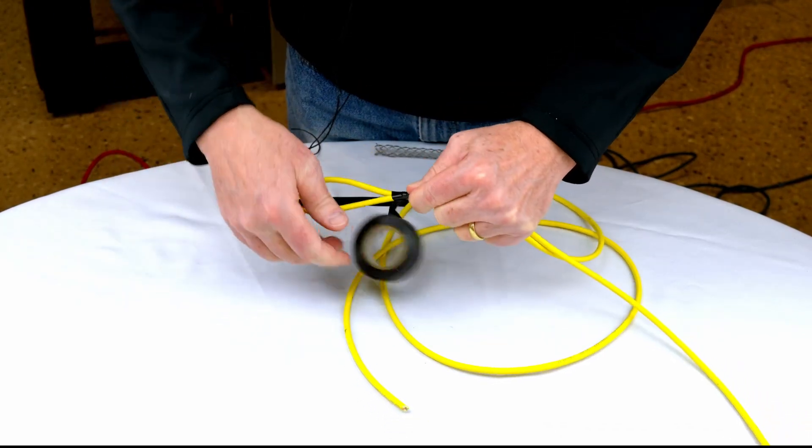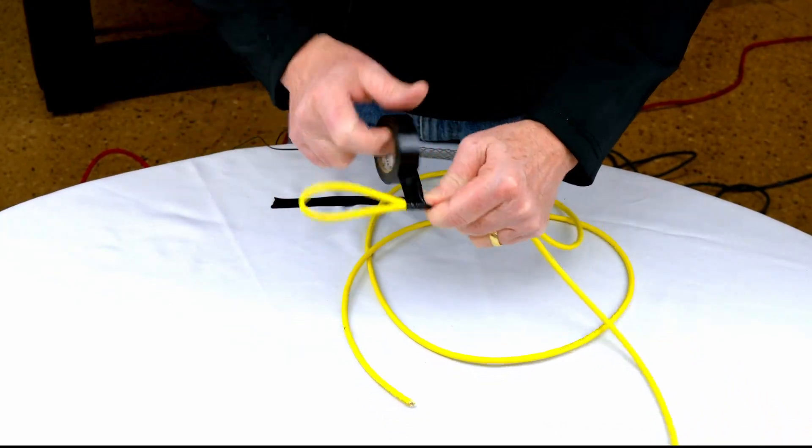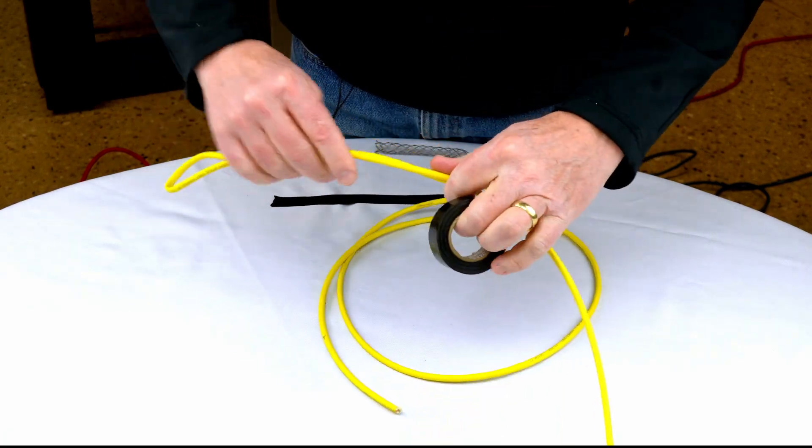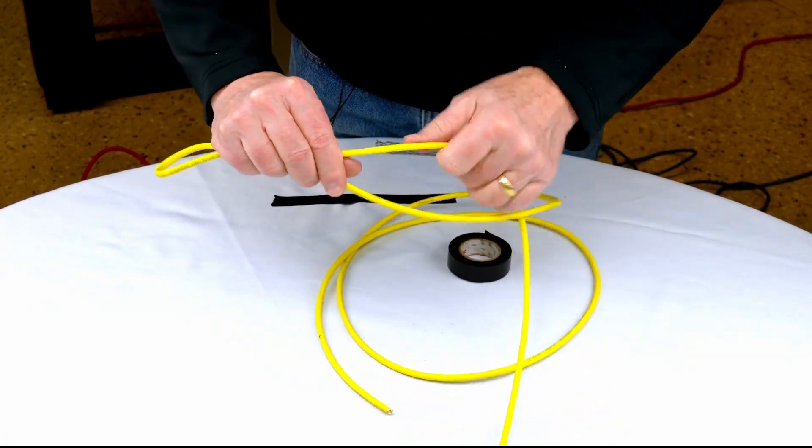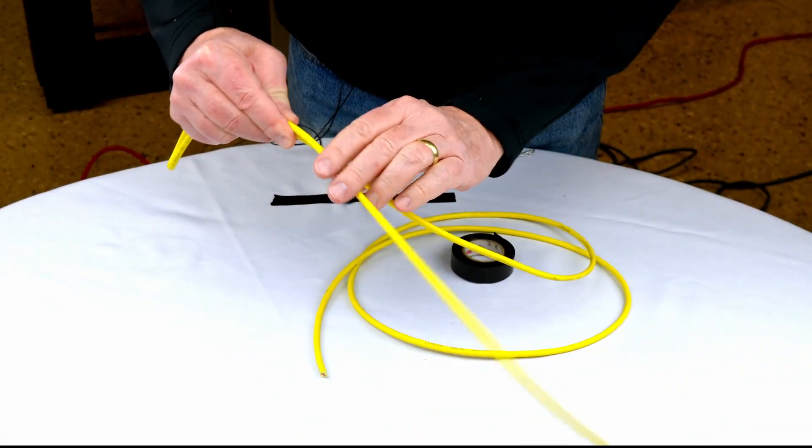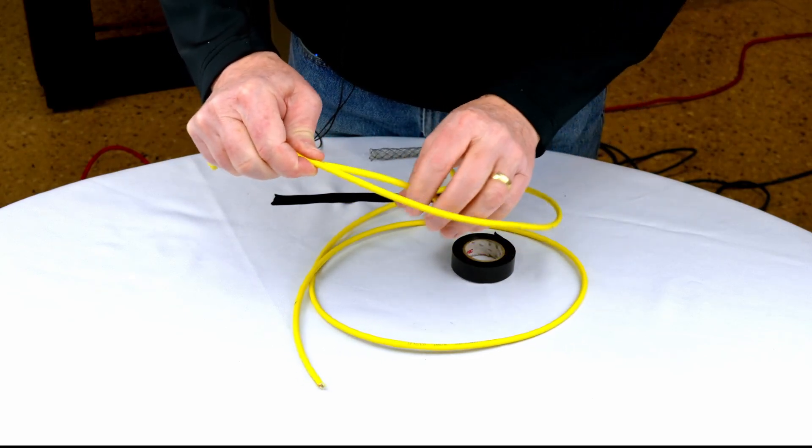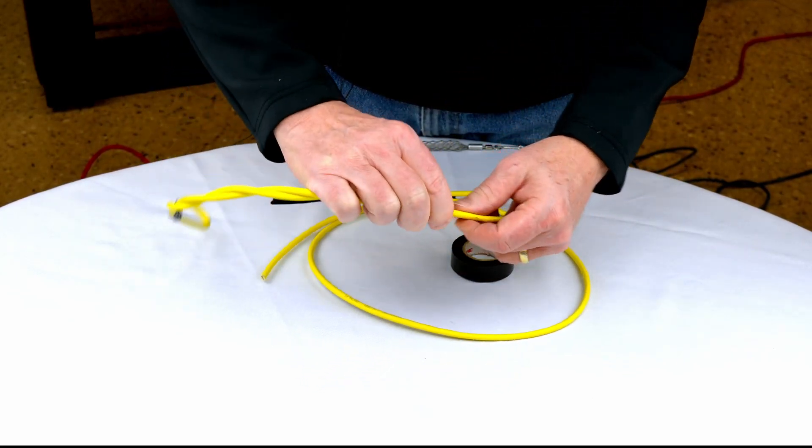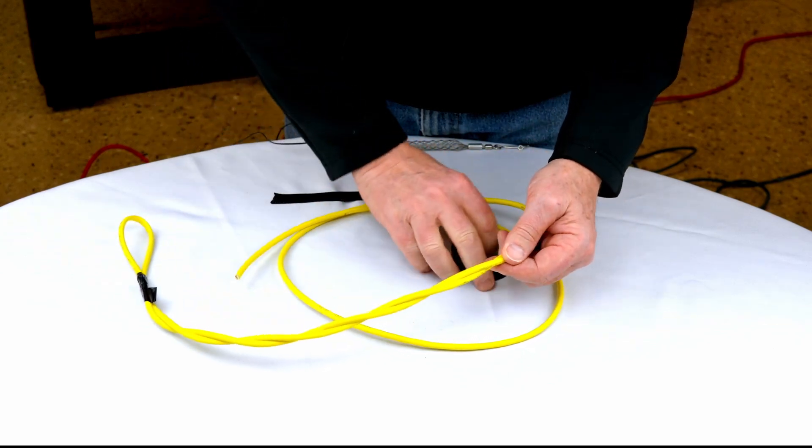So now you've got yourself a pulling eye or loop, and you want to tape this up. You want to wind this around so that we're starting to take some of the stress off of the jacket and onto the pull cable itself.